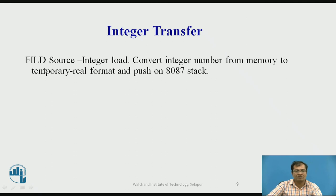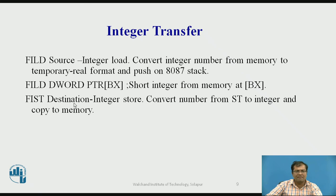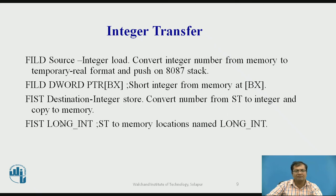FILD source loads an integer — it converts an integer number from memory to temporary real format and pushes it onto the 8087 stack. For example, FILD dword PTR [BX] loads a short integer from memory at BX. FIST destination performs integer store — it converts the number in ST to integer format and copies it to memory. For example, FIST long int copies ST to the memory location named long int.